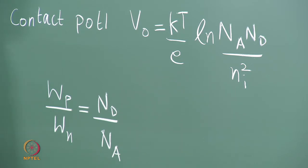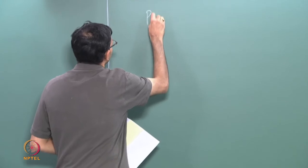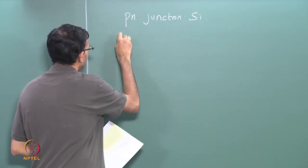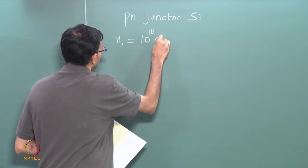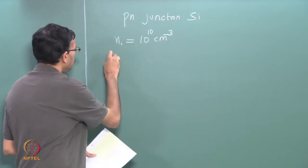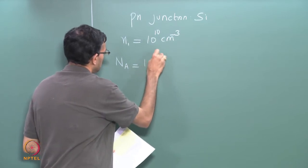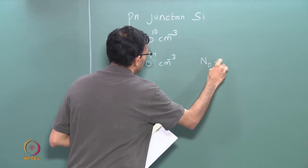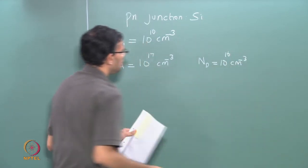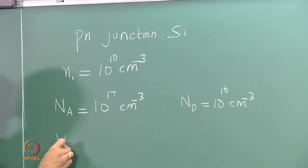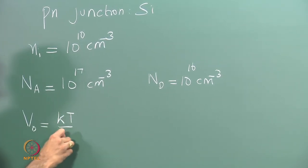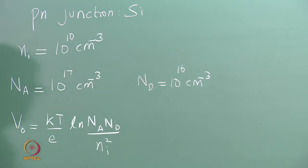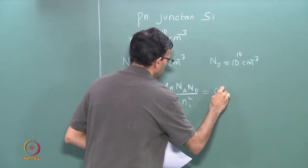Let me go back to the example that we looked at last class. We had a p-n junction with the material being silicon. N_i for silicon is 10 to the 10 per centimeter cubed. We said that we had a p-side with an acceptor concentration of 10 to the 17 and an n-side with a donor concentration of 10 to the 16. Last class we calculated the contact potential in this case and when we substitute the values we get V naught to be 0.78 volts.